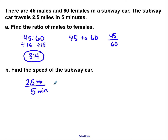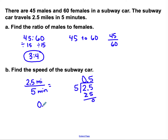A lot of times we write rates with a fraction to compare those two parts. This fraction bar means divided by. When I want to find a unit rate — speed in miles per minute — I have to divide: 2 and a half divided by 5. 5 goes into 25 five times, so my simplified rate is one half mile per minute. You could write miles per one minute, or 0.5 over 1. That's my rate — how much per minute.